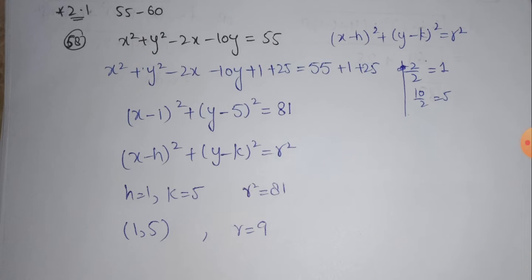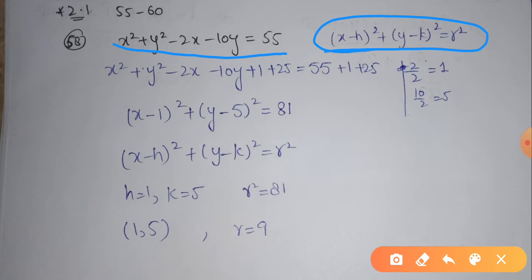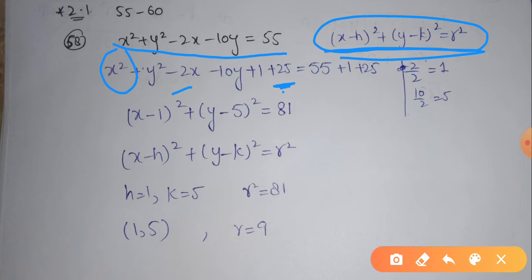We will try to transform the given equation into the form of perfect squares of (X minus H) and (Y minus K) by applying the completing the square method. To complete the square: the coefficient of X squared must be 1, then we divide the coefficient of X by 2 to get the value of B, and then we add B squared to both sides of the equation. The coefficient of X squared is already 1.